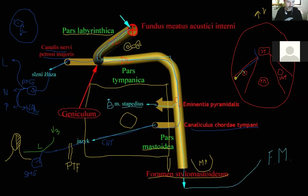From the submandibular ganglion, fibers get back to the lingual nerve, reaching the tongue and two salivary glands: the submandibular gland and the sublingual gland.